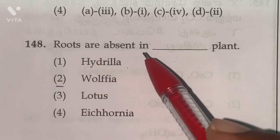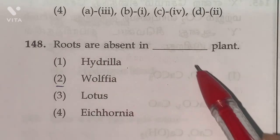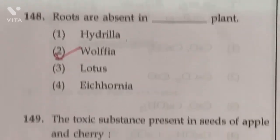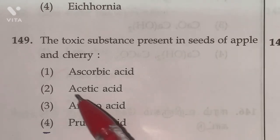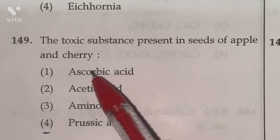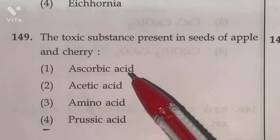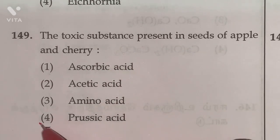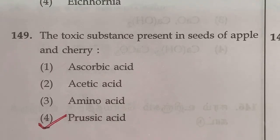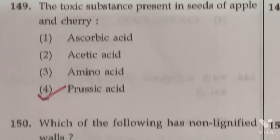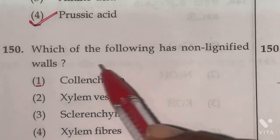Question 148: Roots are absent in the Wolffia plant. Option two is the right answer. Question 149: The toxic substance present in the seeds of apple and cherry is prussic acid. Option four is the right answer. Hydrogen cyanide is also called prussic acid.